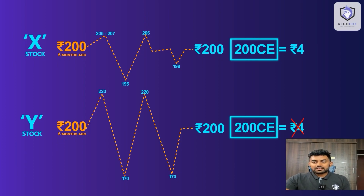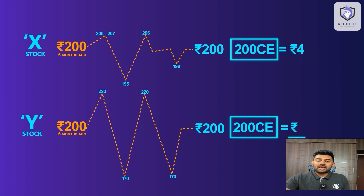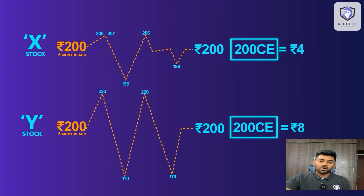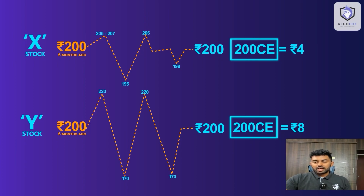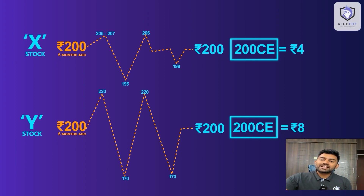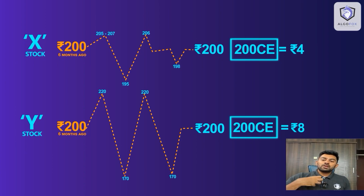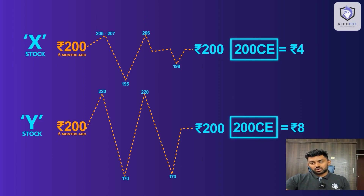So in this case, the 200 call of stock Y might be at 8 rupees, because if someone is selling the 200 call of stock Y they would expect a bigger reward since the risk here is higher. What the Black-Scholes calculator and option Greeks do is try to incorporate the fear factor of the trader, the market sentiment, the volatility — all of this — into a mathematical model.